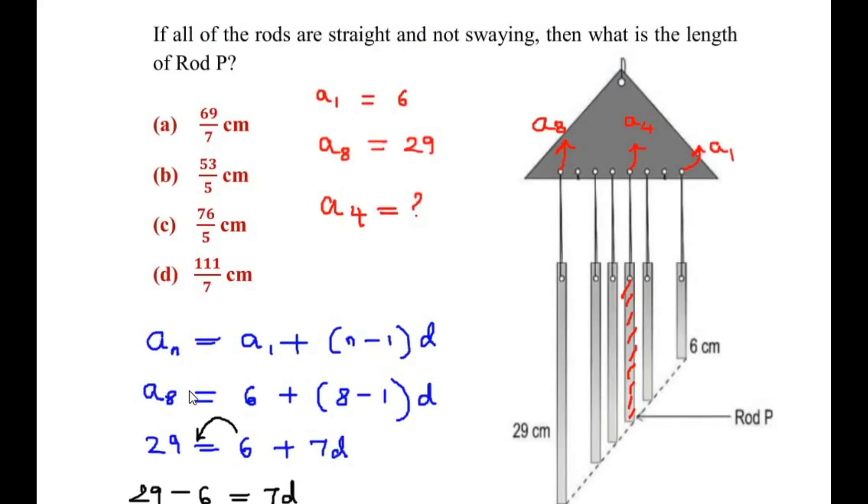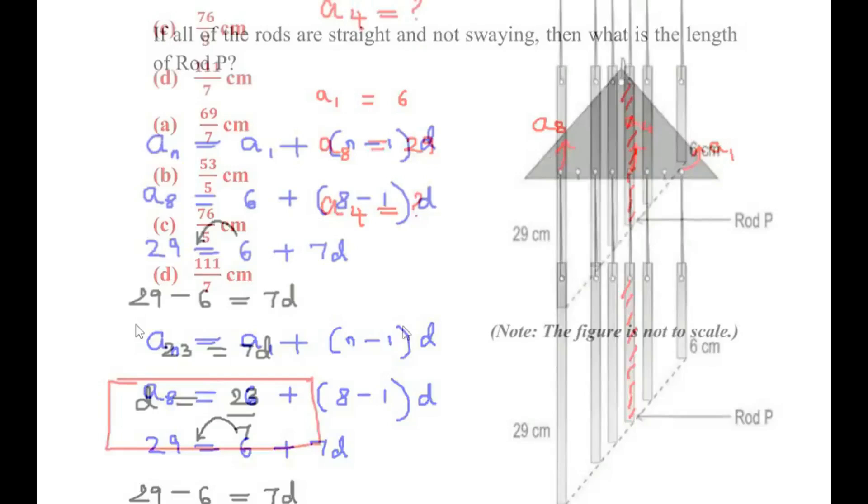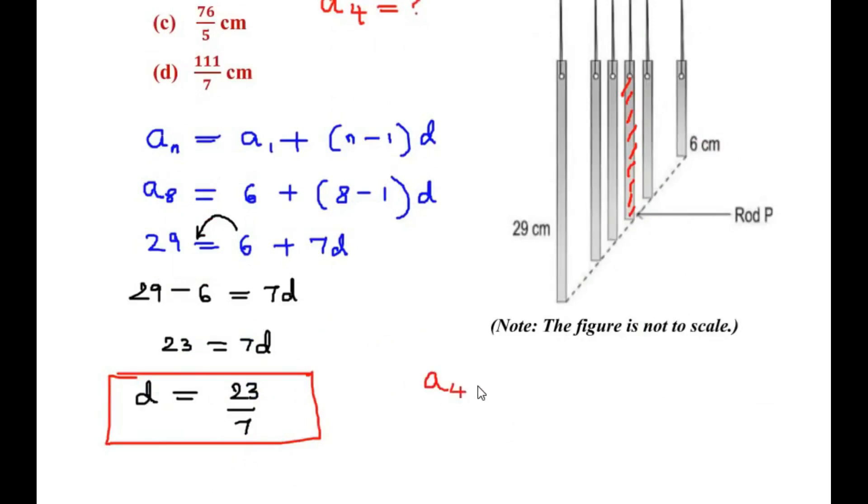So let us again make use of the standard formula. So A4 is equal to A1 plus, since n is 4 now, we are going to write 4 minus 1 times common difference.